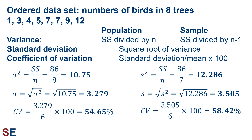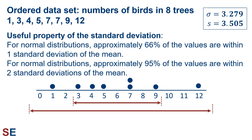For the sample, the coefficient of variation is 3.505 divided by 6 times 100, giving 58.42%. The only difference between population and sample equations is how we calculate the variance. A useful property of the standard deviation is that for normal distributions, approximately 2/3 or 66% of the values are within one standard deviation of the mean, and approximately 95% are within two standard deviations. Going 3.279 or 3.505 above and below 6, that region holds about 2/3 of our data — 6 out of 8 values — making the standard deviation similar to the IQR.